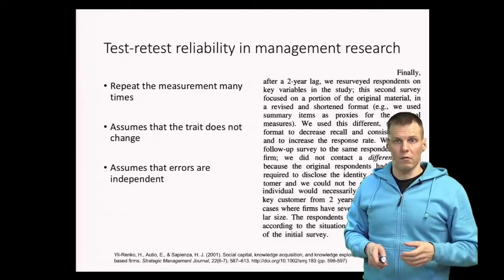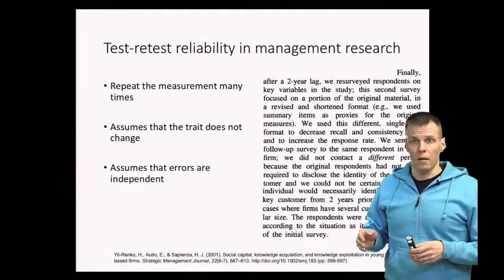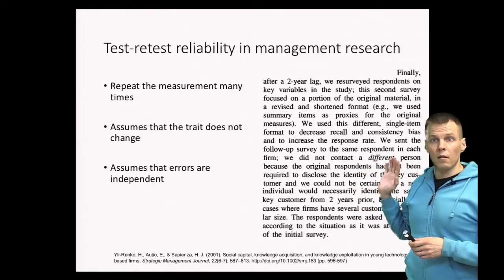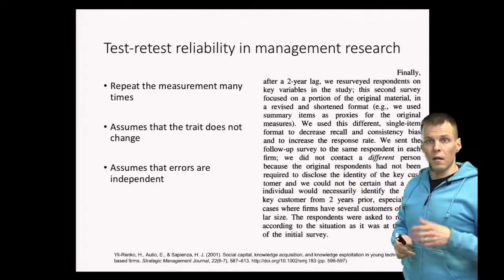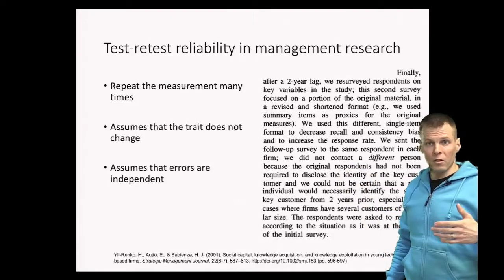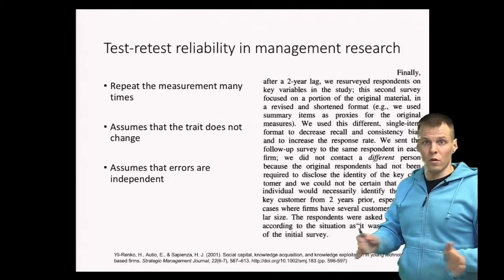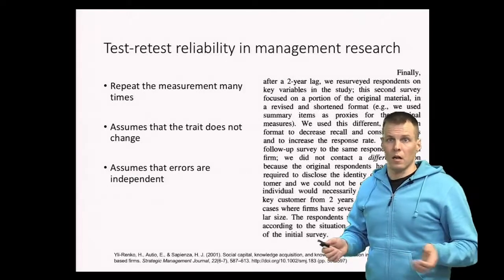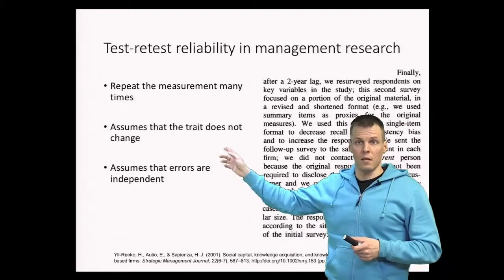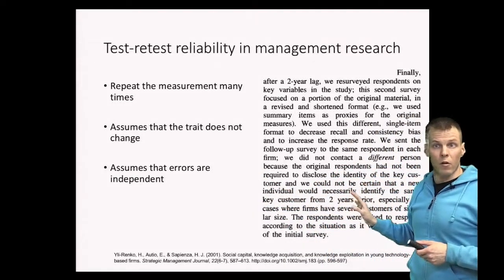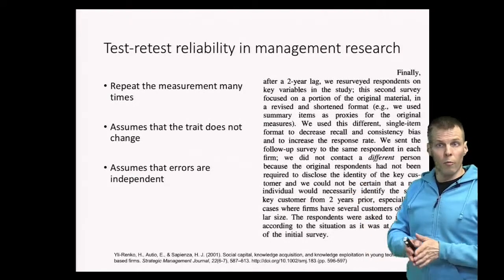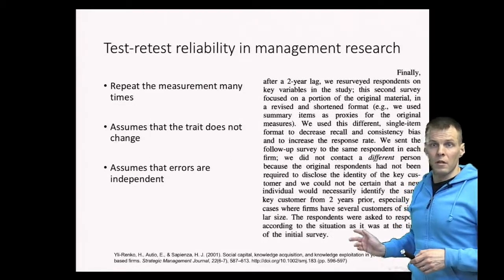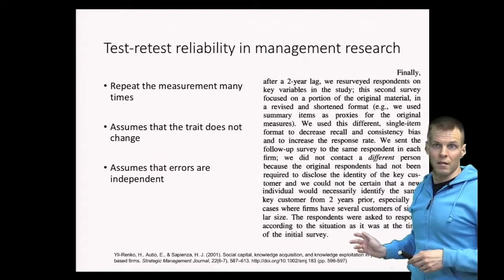Let's look at an example of test-retest reliability from Ylirenko's paper. They asked slightly different questions again with a two-year delay on the key constructs. The study was about small companies, and for a two-year delay to be valid, you would have to assume that nothing changes in small companies in two years — which is not a valid assumption. So this would not be a valid test-retest. It would be valid with a two-week or one-month delay, where you could reasonably assume no major changes. A two-year delay like in this paper is not a good test-retest reliability estimate.